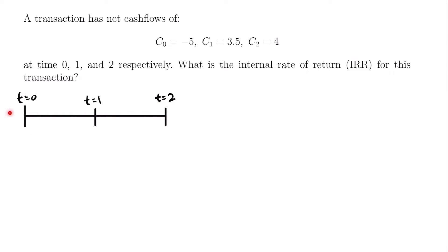At time equals 0 there is an initial investment of $5 — that's what this negative sign means. A negative cash flow means that you are paying that money and not receiving it. So that is just an investment of $5. We will have negative 5 at time equals 0, then at time equals 1 we are receiving a payment of 3.5, and at time equals 2 we are receiving another payment of $4.